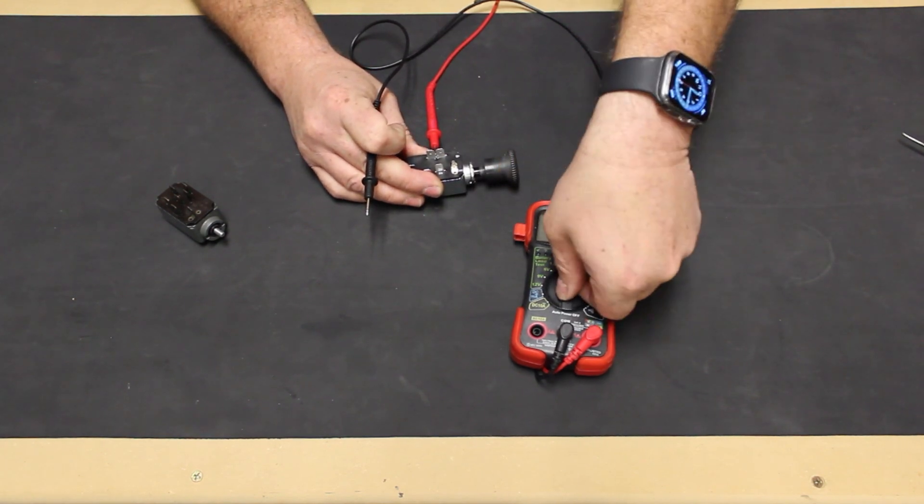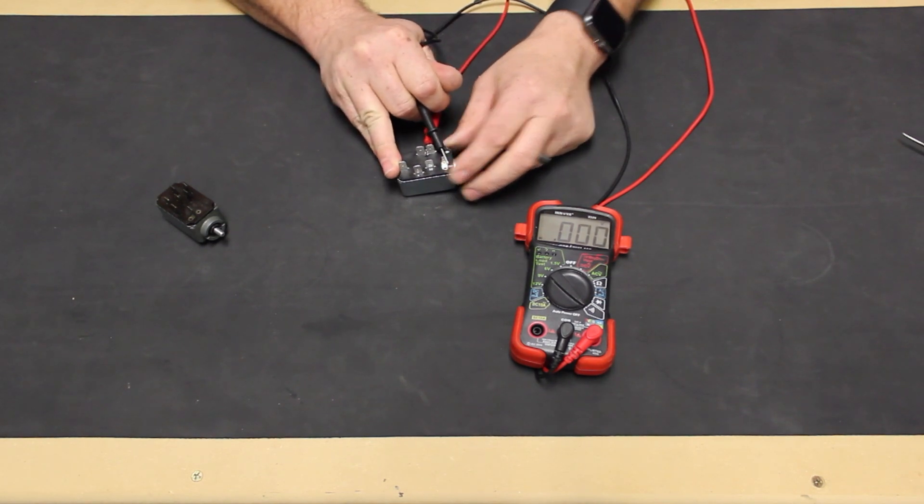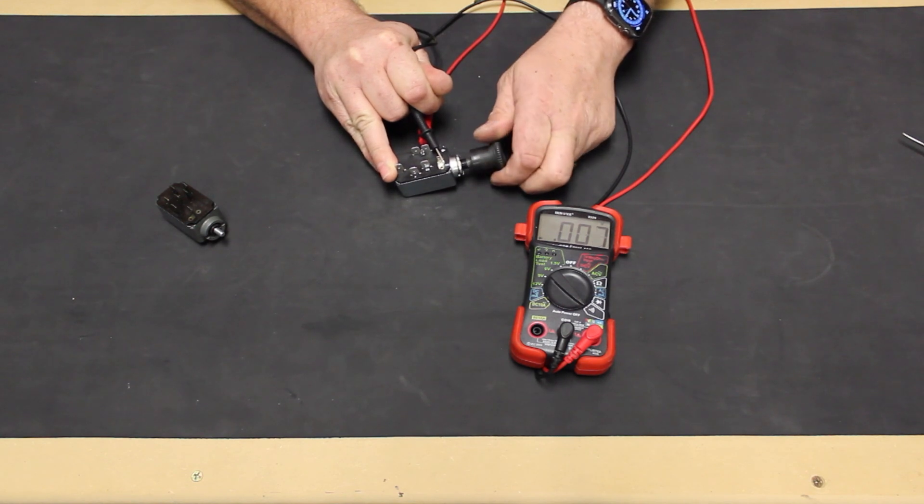To show the rheostat working, we turn off the audio beep for a moment, so we can watch the meter readout change as we twist the headlight knob. And the rheostat works at both on positions.